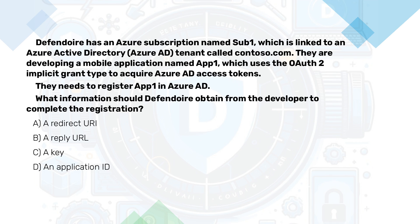We have an Azure subscription which is linked to an Azure Active Directory tenant. We are developing a mobile application which uses the OAuth2 implicit grant type. We need to register the application in Azure Active Directory. What information should we obtain from the developer to complete the registration? A. A redirect URI. B. A reply URL. C. A key. D. An application ID. Now pause the video here, have a bit of think and then continue when you are ready. For native applications, you need to provide a redirect URI, which Azure Active Directory will use to return token responses.